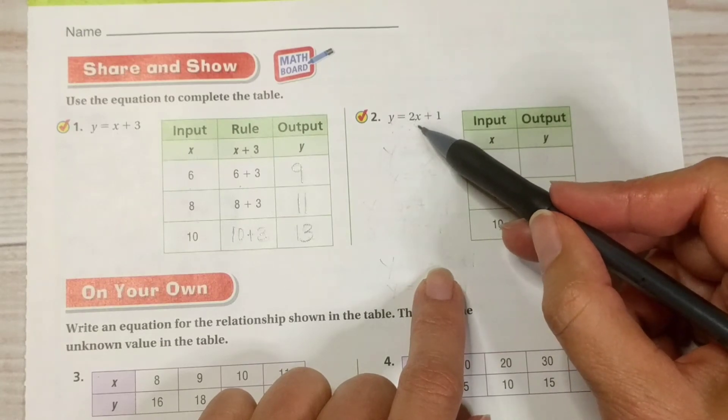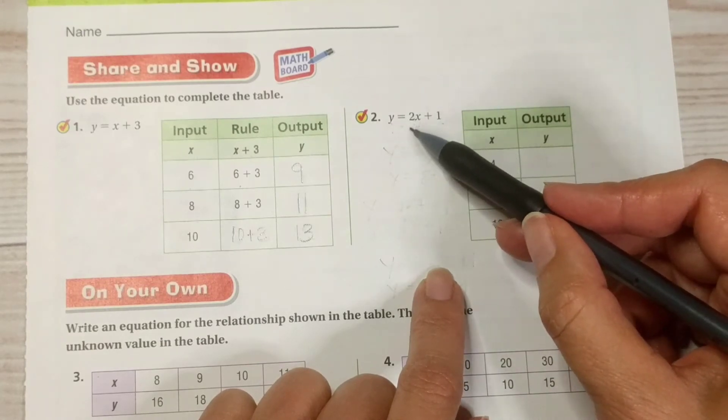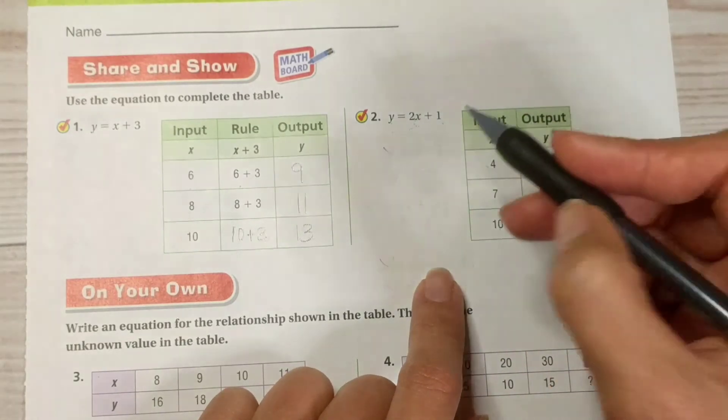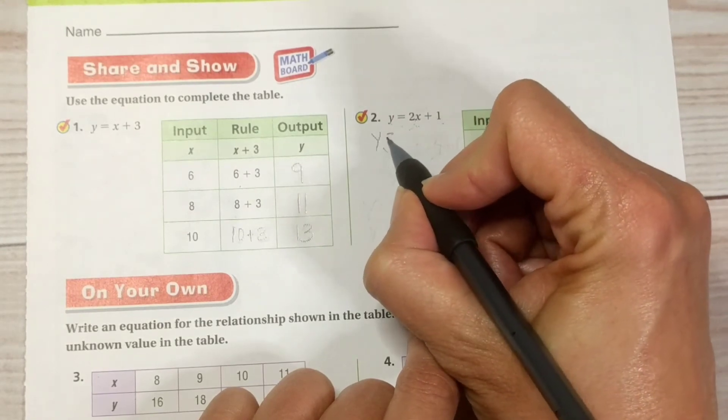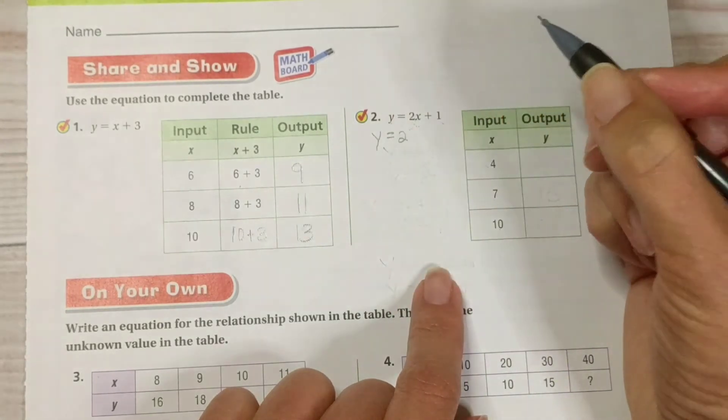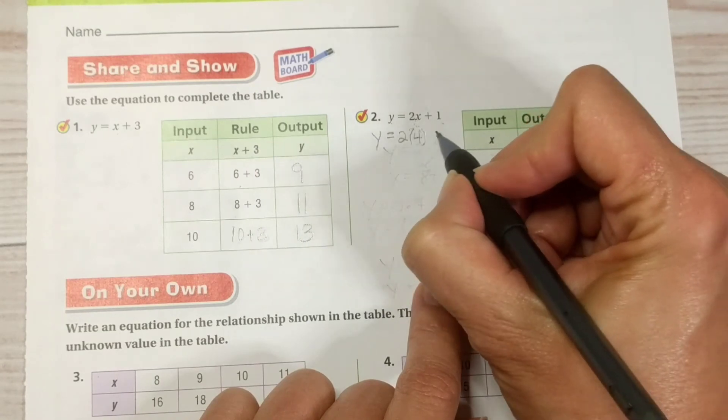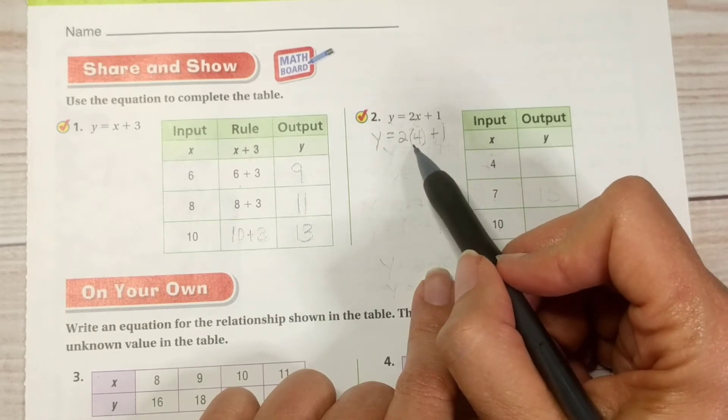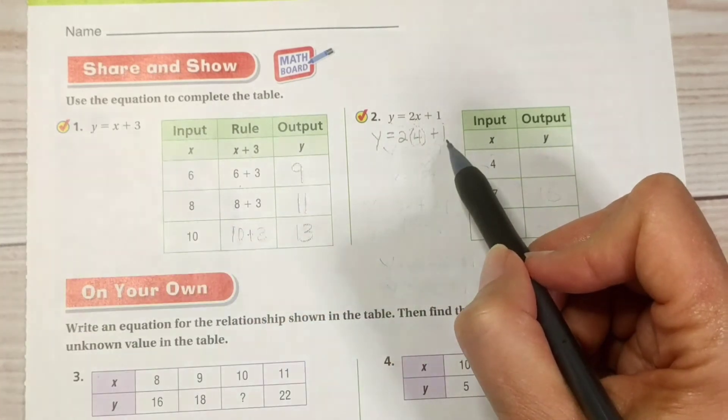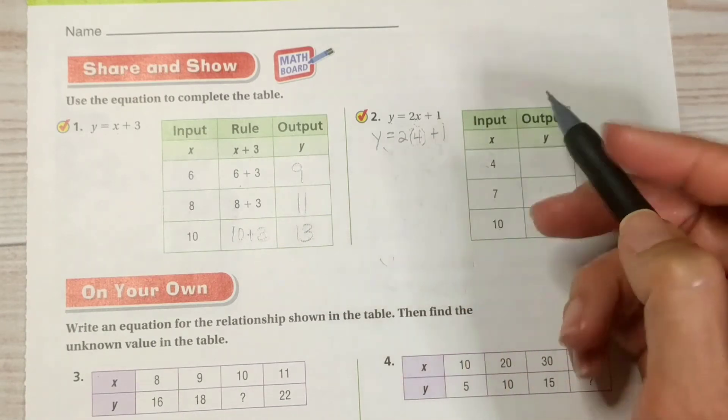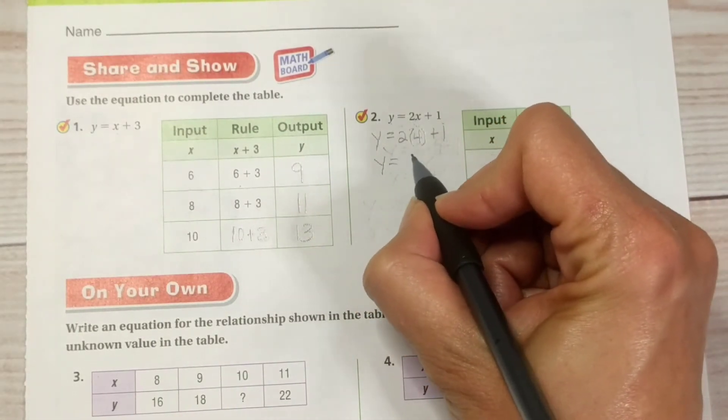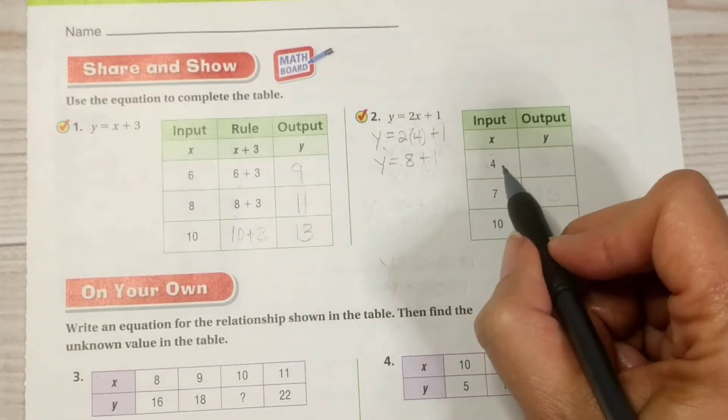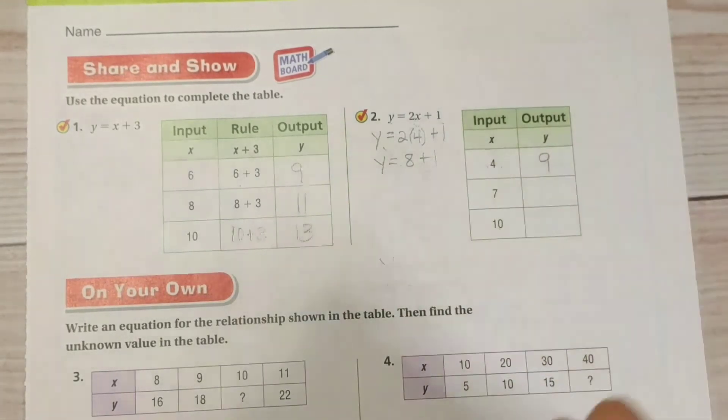So, again, we have Y equals 2X plus 1. When we substitute 4 in for X, let's go ahead and do some margin work so that Mrs. Allen and Ms. Chang and Ms. Knorr know exactly what's going on in your head. All right, Y equals 2 times 4 plus 1. Now, according to the order of operations, we do multiplication before addition. So, Y equals 8 plus 1. So, our output value, or our Y, when X equals 4, is 9.